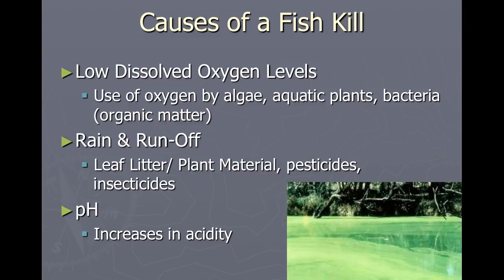The most common cause of fish kills is a reduction in the amount of dissolved oxygen available for fish metabolism. Plants, including algae, produce oxygen during the day; however, these same organisms consume oxygen during the night. This consumption of oxygen depletes the amount of dissolved oxygen available for the fish, causing fish kills.